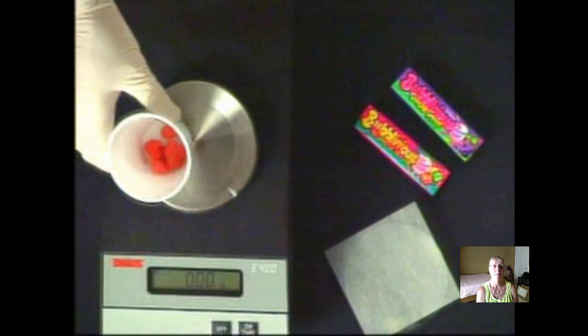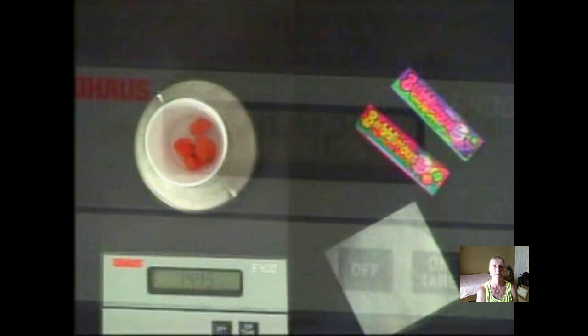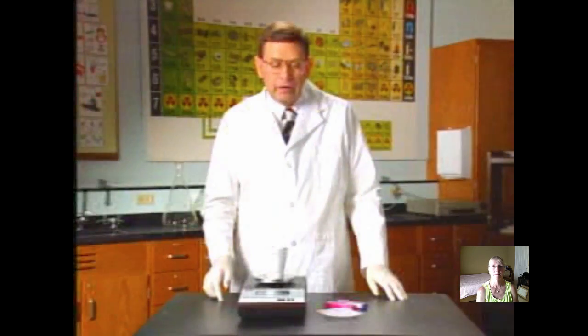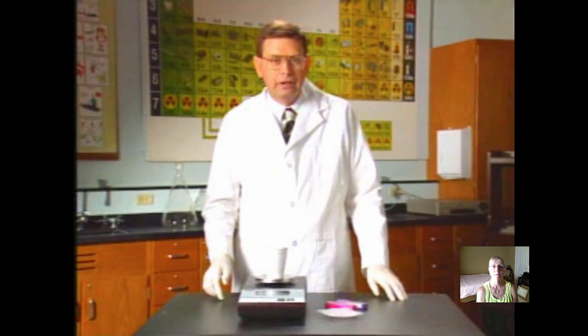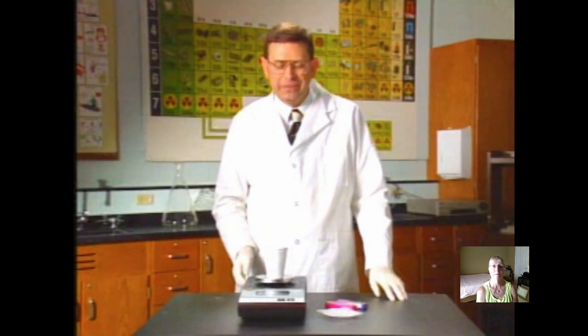Our five volunteers have completed chewing the gum for five minutes and we've collected the gum in the paper cup. Now we mass it. Now we're able to take the data of our mass of the gum before and after chewing and compute the percent of sugar.